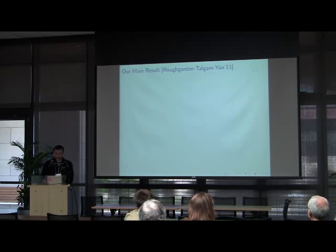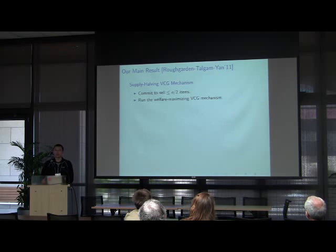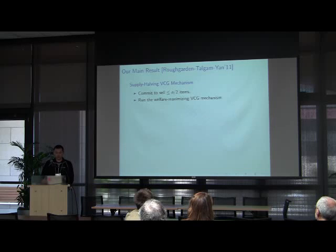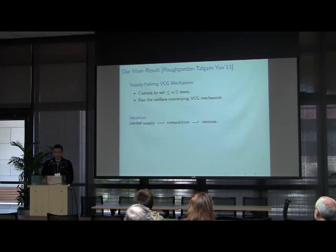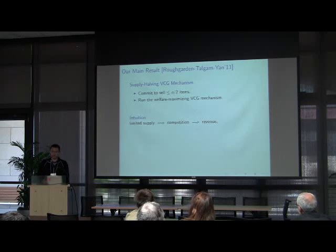Our main result considers a very simple mechanism: the supply-halving VCG mechanism. We commit to selling at most half of the items, then run VCG to maximize welfare — finding the allocation that maximizes total value and charging the corresponding VCG payments. Intuitively, the artificial limit on supply drives up competition among bidders, which drives up prices and yields better revenue.